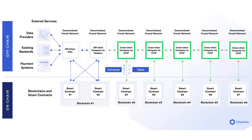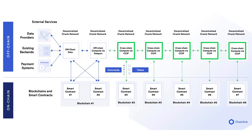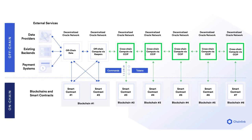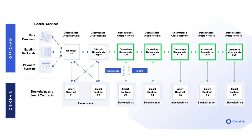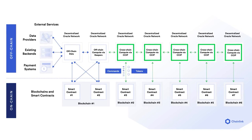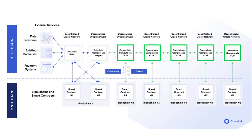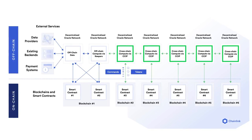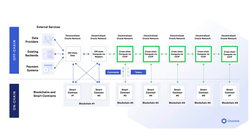Finally, the recently announced Cross-chain Interoperability Protocol, or CCIP, will enable cross-chain computation, where smart contracts can send commands and assets across different blockchain networks.